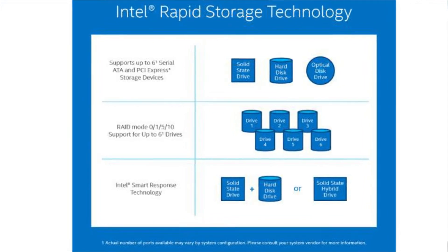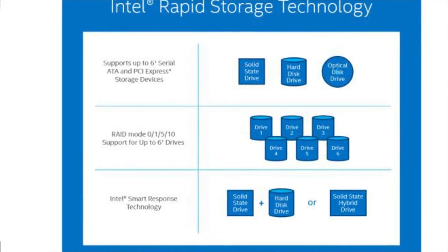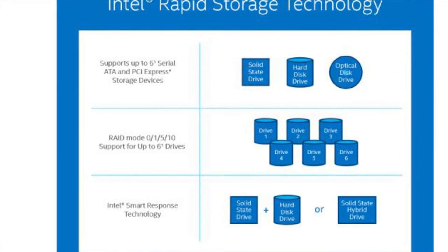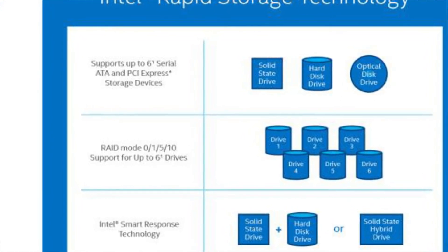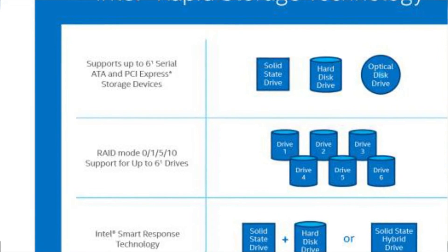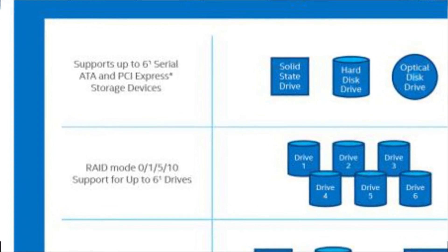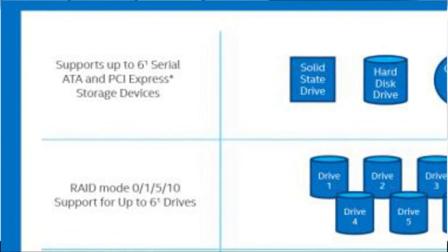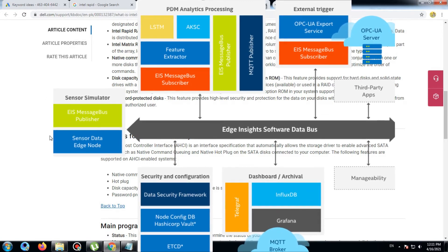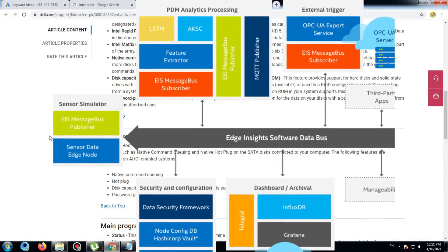Disk Capacity: This feature provides support for solid state drives and capacity drives greater than two terabytes that are supported, and pass-through devices available for use in a Rapid configuration. Drives greater than two terabytes are allowed as long as the version of the option ROM in your system supports this feature. Password-protecting disks: This feature provides a level of security and protection of your data on your disk with a password, denying access to unauthorized users.